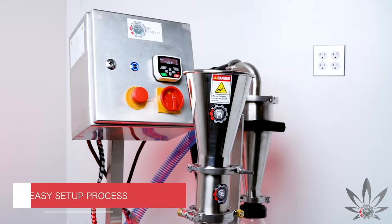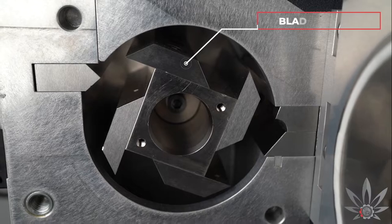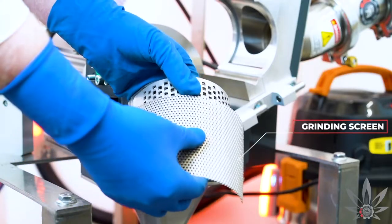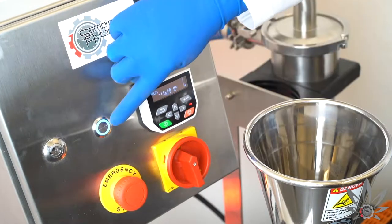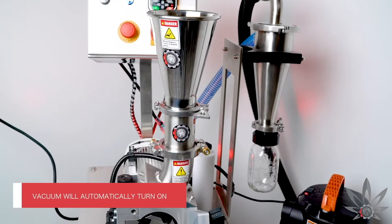Setup for the SAMS15 cutting mill is fast and easy. Once a technician chooses their desired blade location, grinding screen, and blade speed, they can turn on the machine. The vacuum will automatically turn on and you're ready to begin milling.